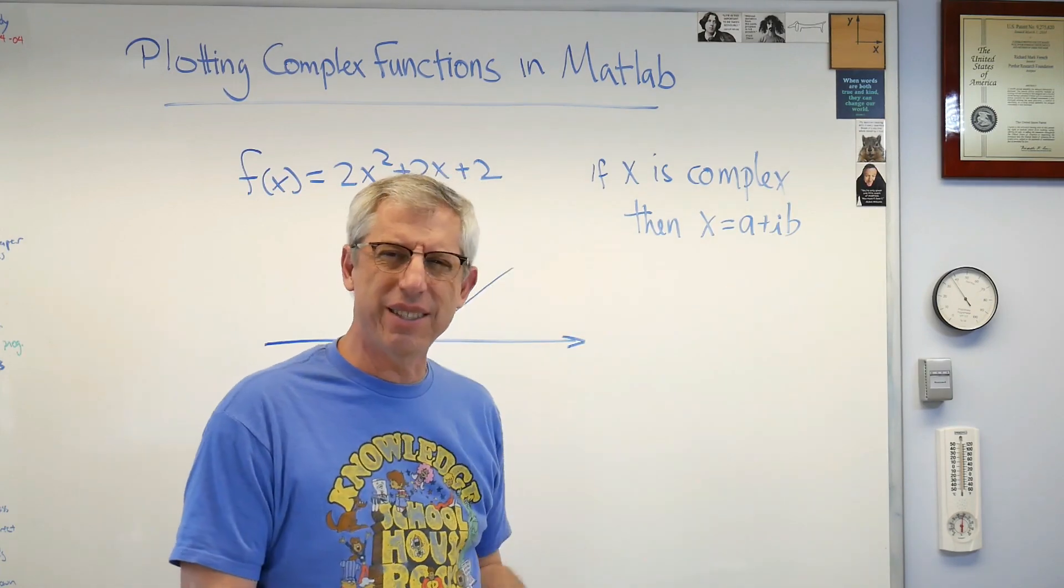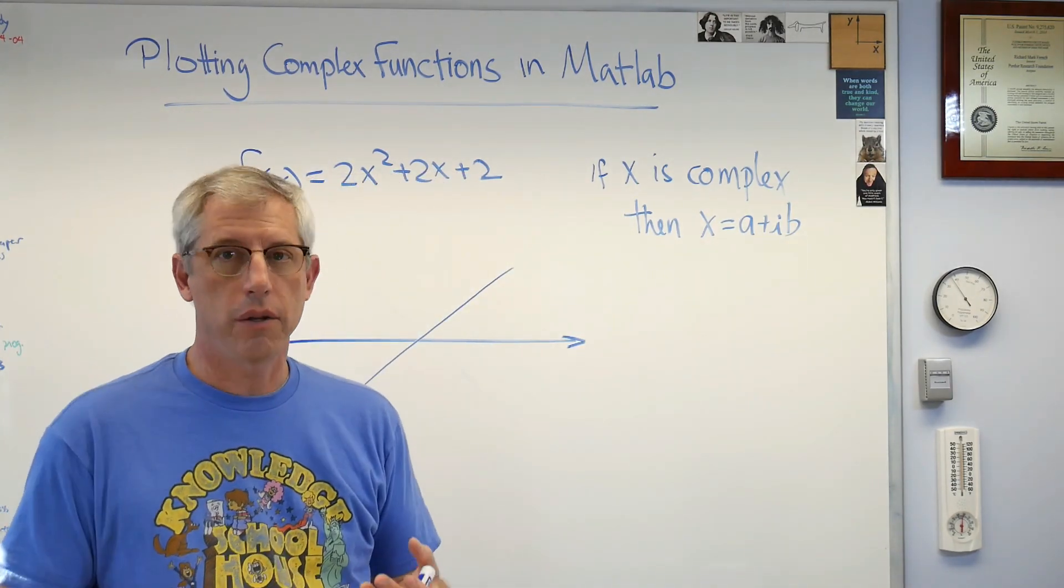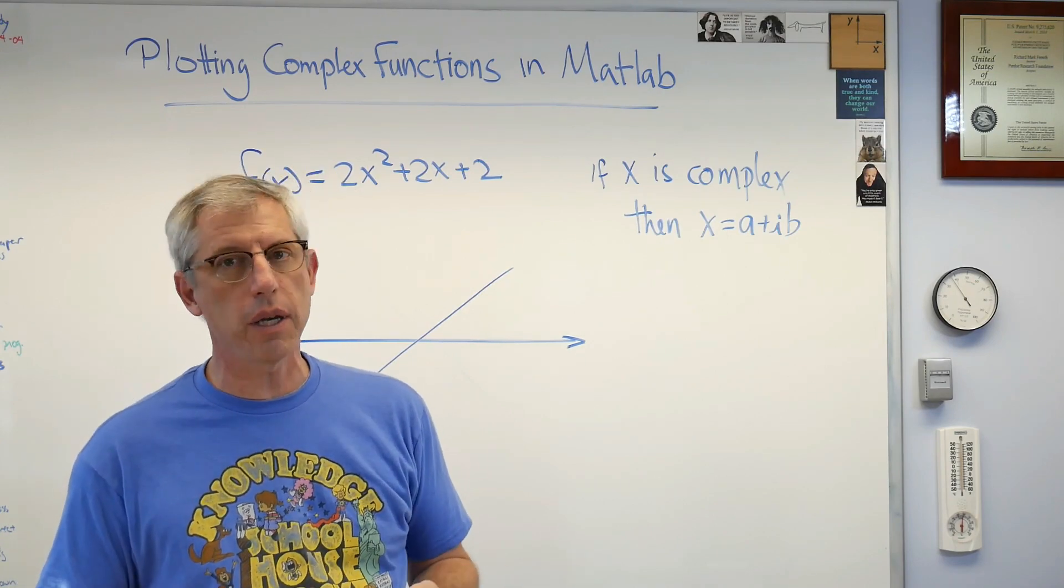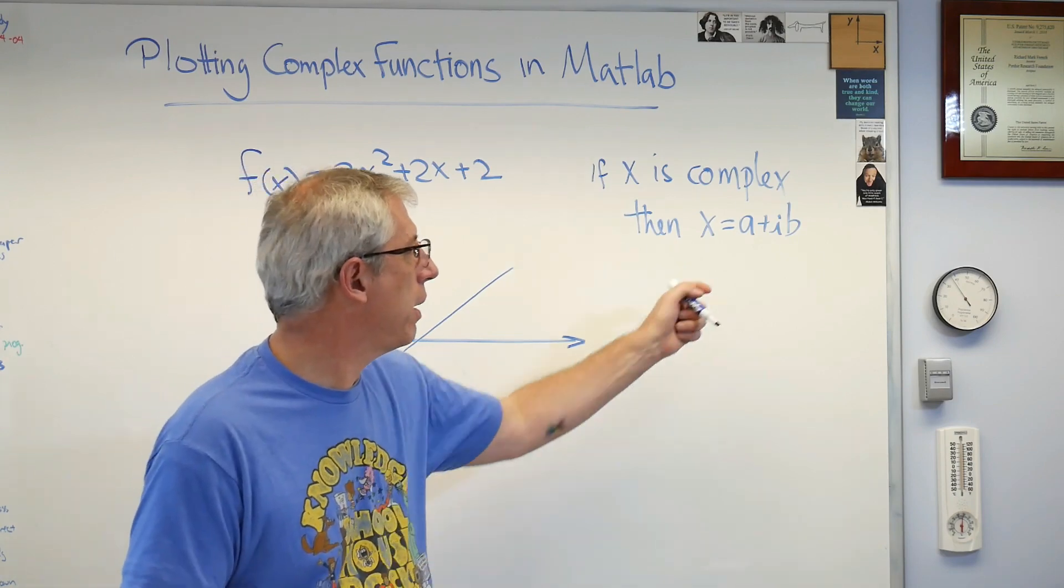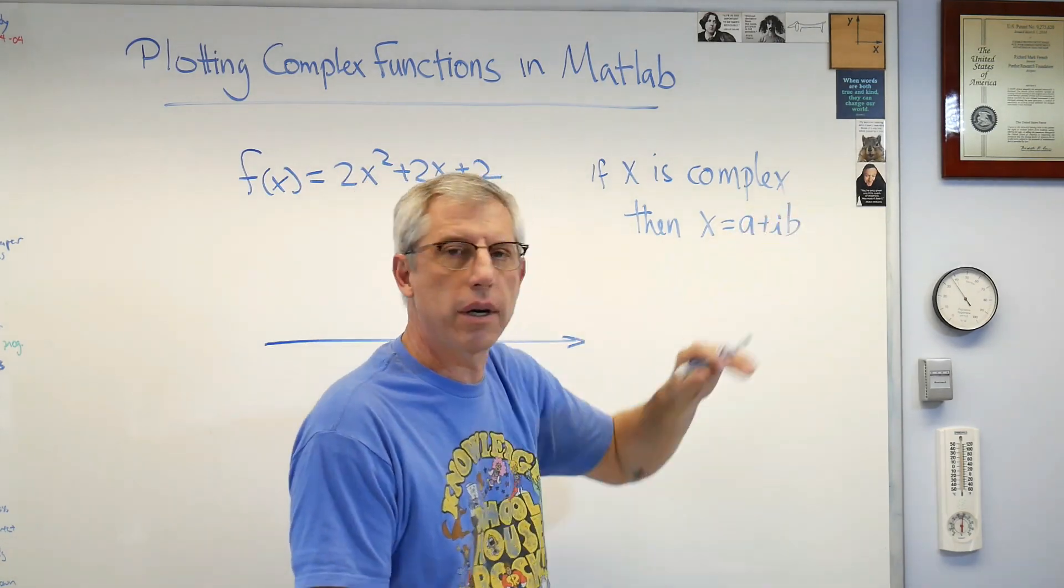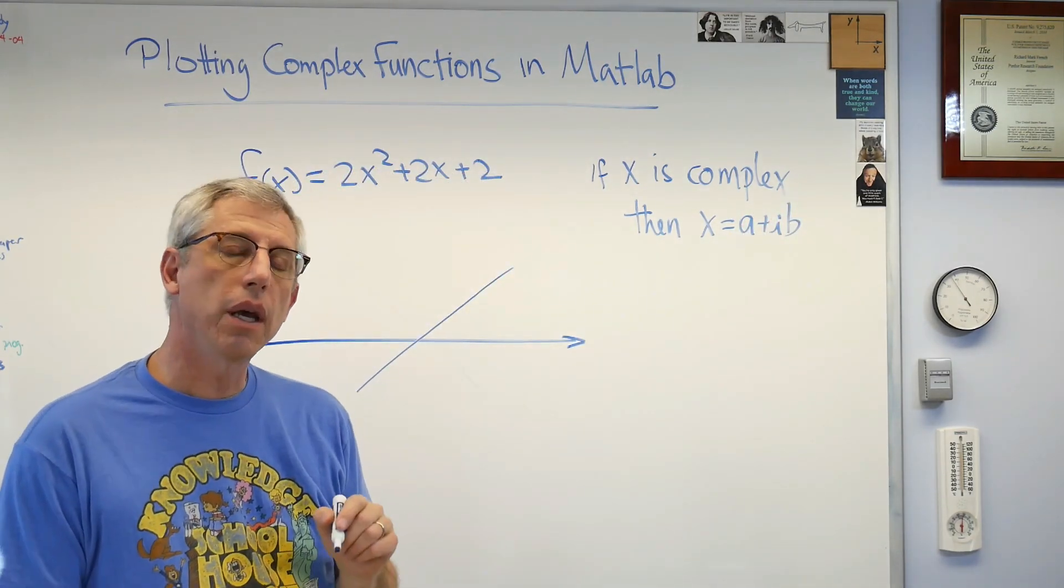When you say imaginary, it makes it sound like it's not a legitimate mathematical entity. It is. There's two kinds of numbers, real and imaginary. As far as I've been able to tell from talking to mathematicians, there's no other numbers out there. Most of the time we limit ourselves to real numbers because that describes a lot of the world around us.